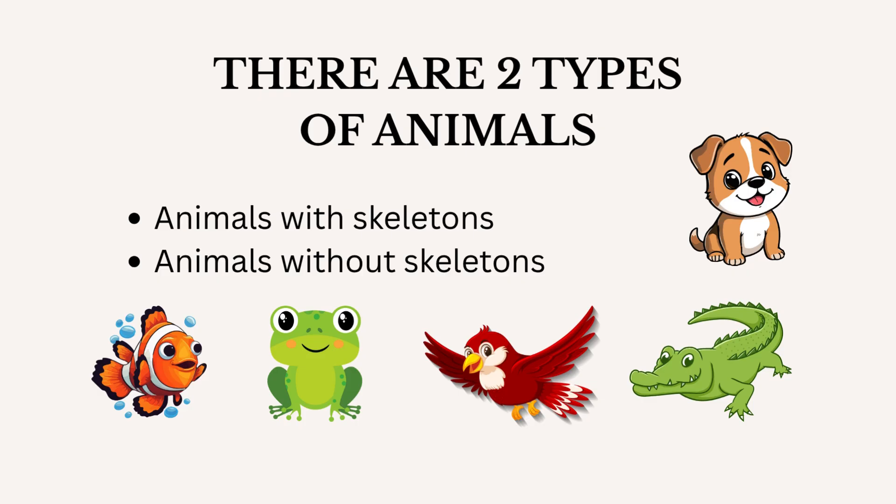There are two types of animals. They are animals with skeletons and animals without skeletons.